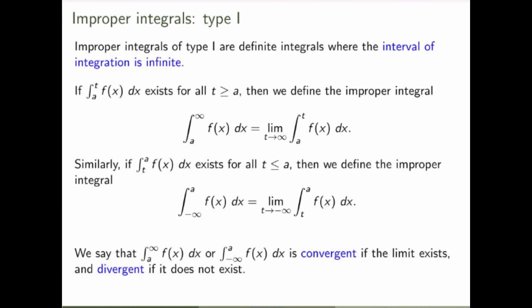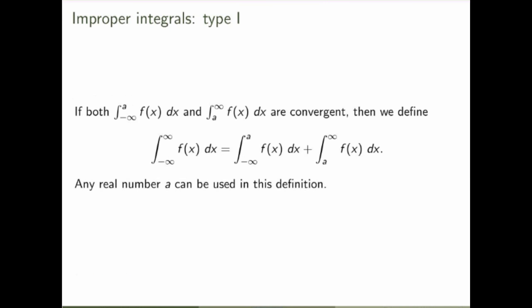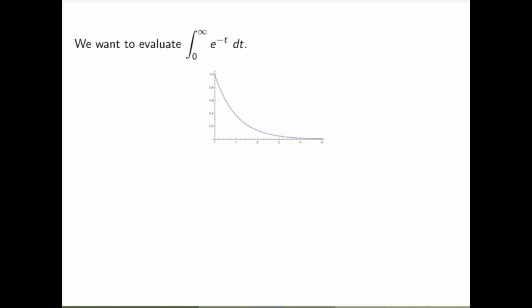We can also define improper integrals where both limits of integration run to infinity. If on both sides the integral is convergent, we define the integral from minus infinity to infinity as just being the sum of the two. Any real number a can be used here, and the left-hand side will be the same. So let's go back to our problem and try to evaluate the amount of chemical produced if you let the experiment run forever.